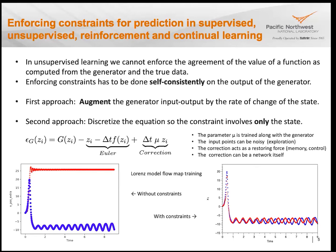For the Lorenz problem with GANs: without enforcing constraints, the network works for a while and then becomes unpredictive. With constraints enforced using the crude Euler method and simple correction term, results are much better. GANs can be stubborn and delicate to train, so there is still room for improvement, but the constrained approach does provide a meaningful benefit.